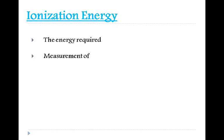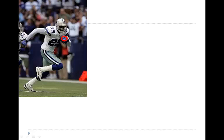Ionization energy is the energy required to remove an electron. It is a measurement of how strongly an atom holds onto its valence electrons, or outermost electrons. Ionization energy decreases as you move down a group. Using a football analogy: when running with the ball held close to the body, the body represents the nucleus and the ball represents the valence electrons. With the valence electrons so close, this results in high ionization energy.